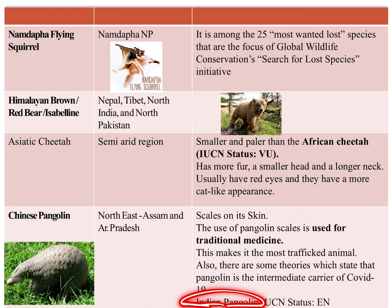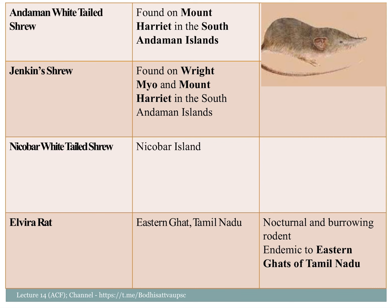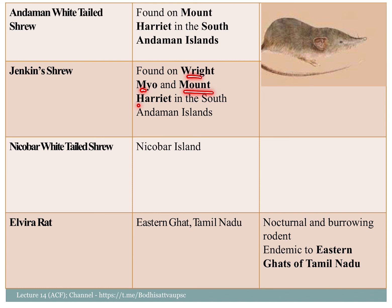We have covered the white-tailed shrike. It is a different category but separated in the model. The South Island is a great area — Mount Harriet is the location. This is a white-tailed tree and island species.